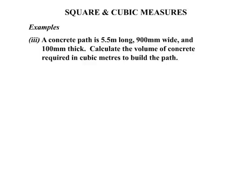Our third and final example of this lesson: a concrete path is 5.5 metres long, 900 millimetres wide, and 100 millimetres thick. We need to calculate the volume of concrete required in cubic metres to build the path. Now if we look at our three measures there, we must convert all the units to the same measure.